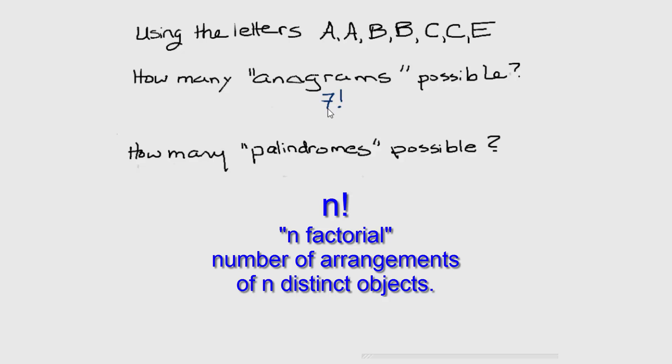Some of the arrangements will not be distinguishable from other arrangements. The two A's are identical, and we would have counted two times too many arrangements of the A's, similarly for the B's and the C's.